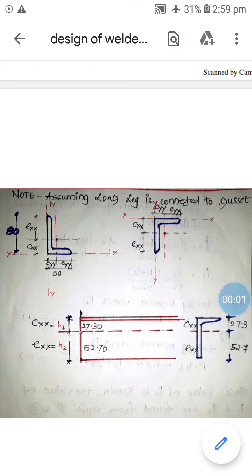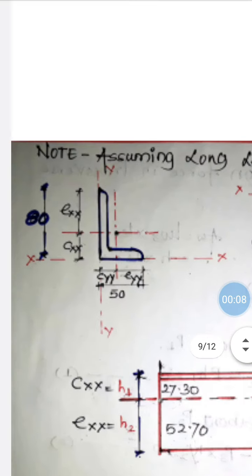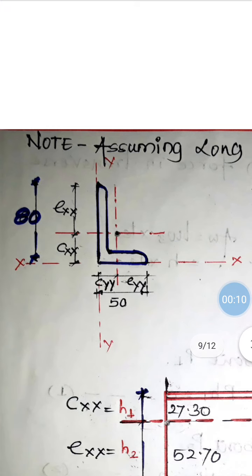Continuing from the first part, we have a small diagram showing the properties cxx and exx. From the centroid towards the junction it is cxx about the horizontal axis, and from the center towards the toe it is exx about the horizontal axis. About the vertical axis it is cyy and eyy.